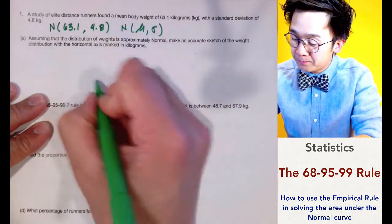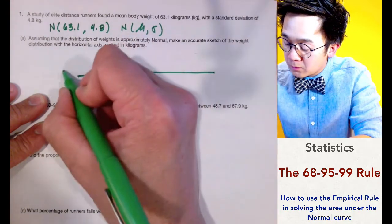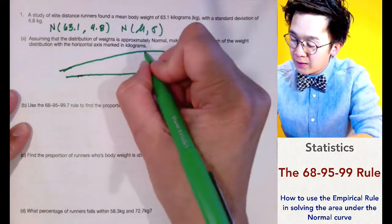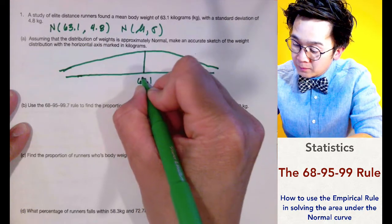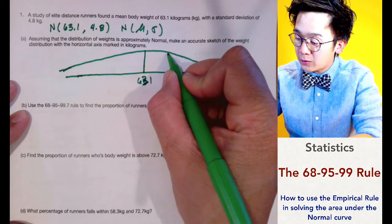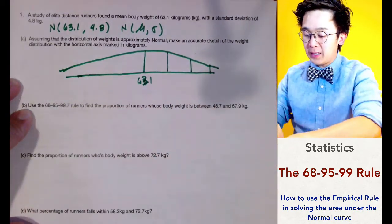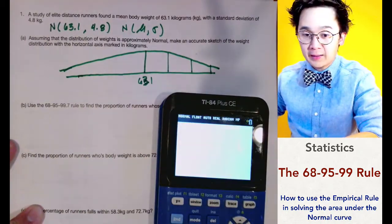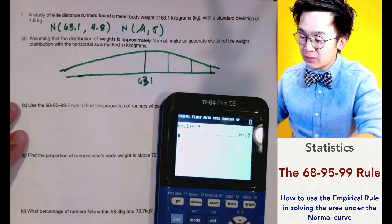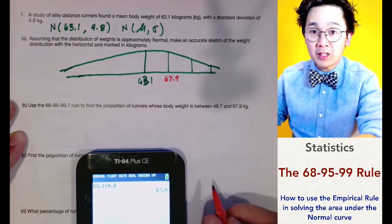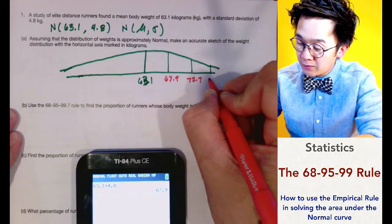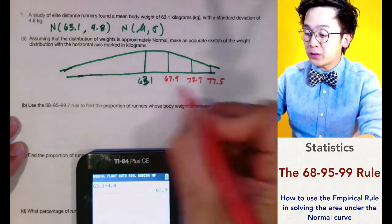We construct our bell-shaped curve with the mean of 63.1 at the center. We then mark 3 standard deviations to the right: adding 4.8 gives 67.9 for the first, adding another 4.8 gives 72.7 for the second, and another 4.8 gives 77.5 for the third standard deviation.